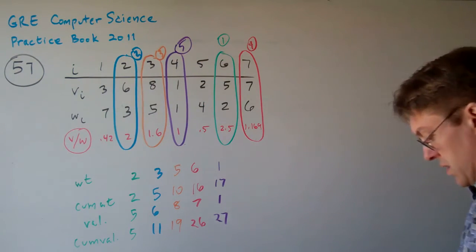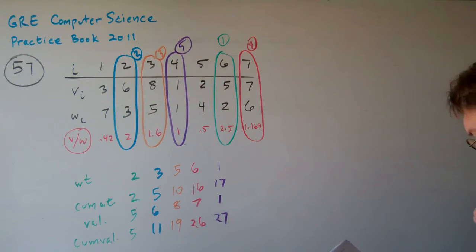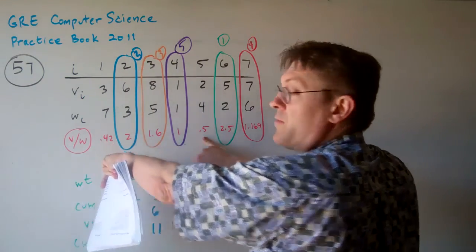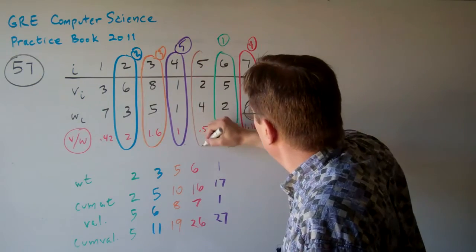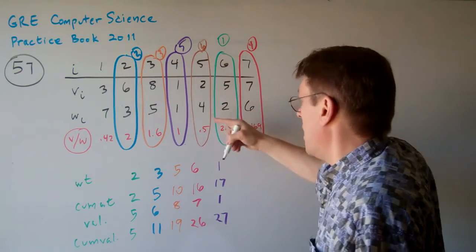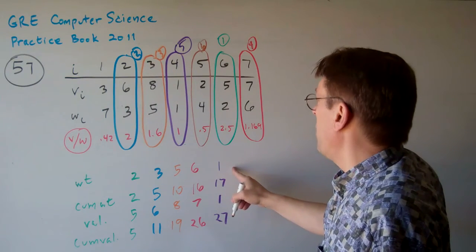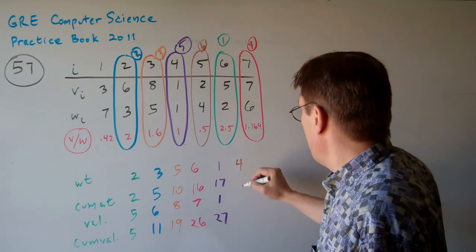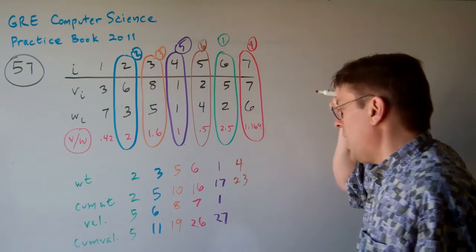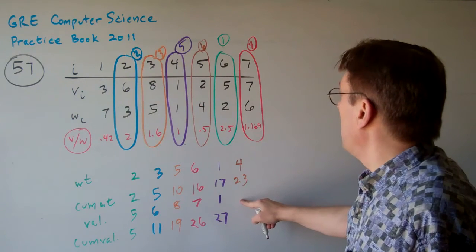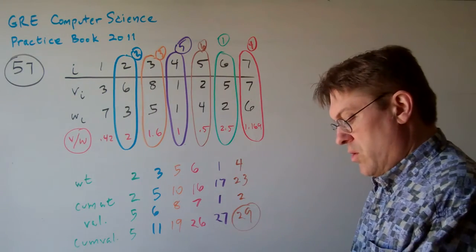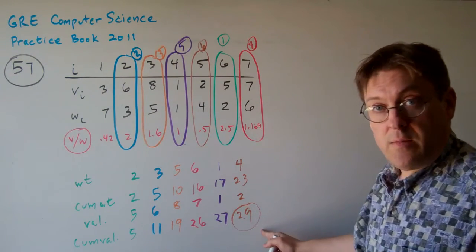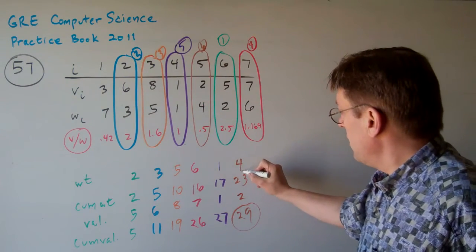Now let's try 6. The next item we're going to get. The next one, we only have two more left. We have .5 and we have .42. So .5, that's going to give us item number, weight of 4, which gives us 23. And the value is 2, which gives us 29. So our total value is 29 and our total weight is 23.